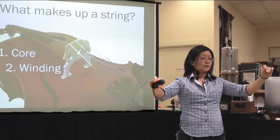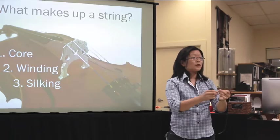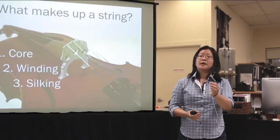Then we have the silking. The silking are the colored ends on the string. These are usually some sort of a synthetic fabric, some sort of nylon thread.